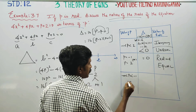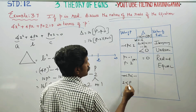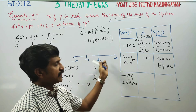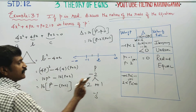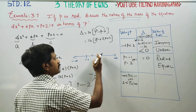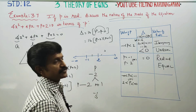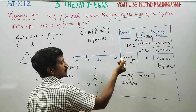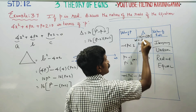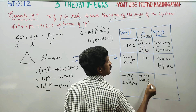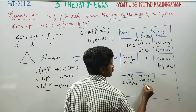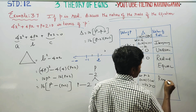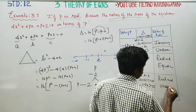When p is greater than 2, for example let p equal to 3: delta equals 16 into 3 minus 2 into 3 plus 1, which is 16 into 1 into 4, equal to 64. Since 64 is positive, greater than 0, the roots are real and unequal.